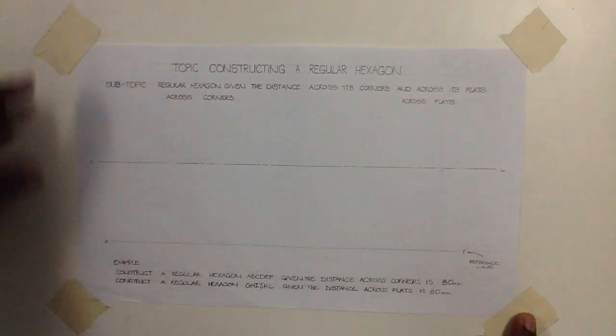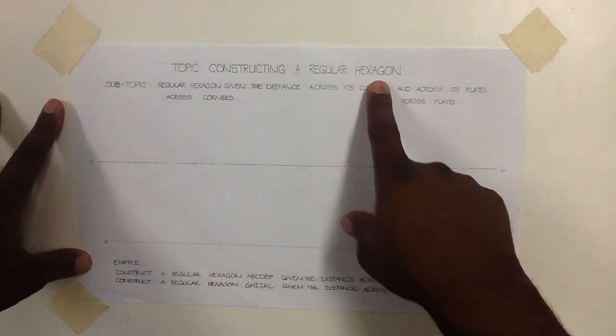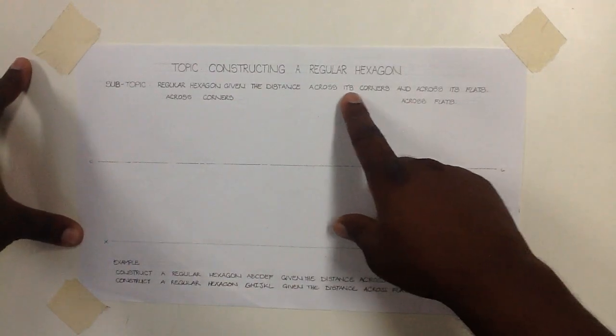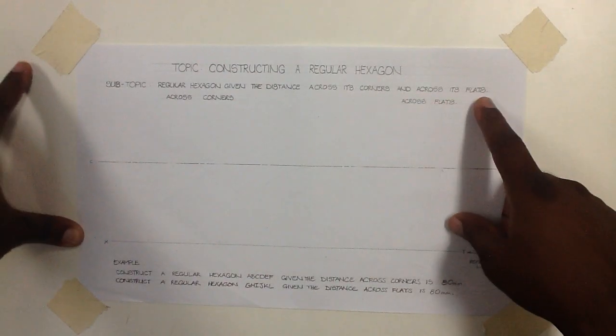If you have any questions or comments, you can send your email to autocadalive at gmail.com. We proceed with the construction of a regular hexagon. Our subtopic is regular hexagon, given the distance across its corners and across its flats.